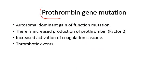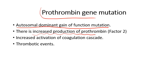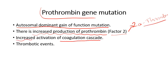Prothrombin gene mutation is another autosomal dominant gain-of-function mutation. Here there is increased production of prothrombin (factor 2). Since prothrombin is converted to thrombin (factor 2a), more prothrombin means more thrombin, leading to increased activation of the coagulation cascade and in turn various thrombotic events.